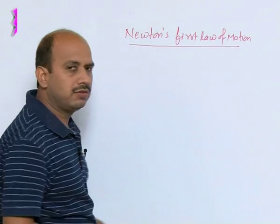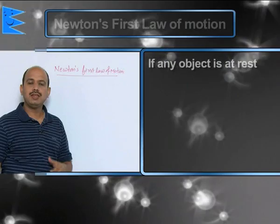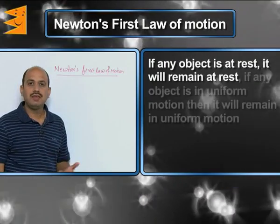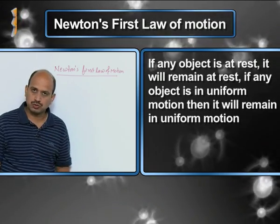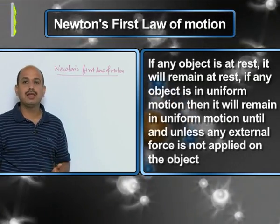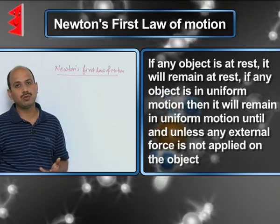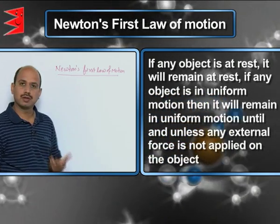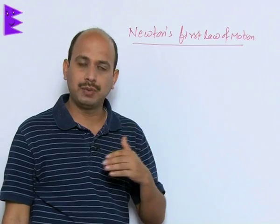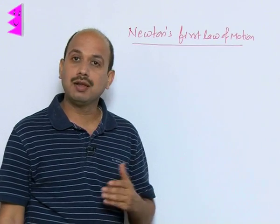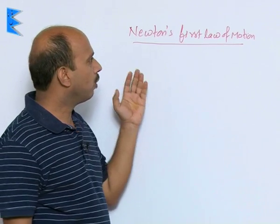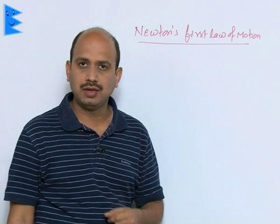In this case, if any object is at rest, it will remain at rest. If any object is in uniform motion, it will remain in uniform motion unless any external unbalanced force is applied on the object. Newton's first law of motion is very simple to understand.